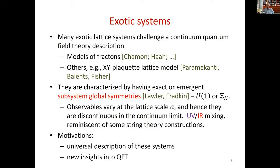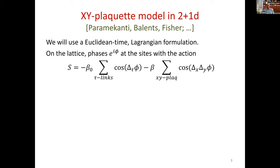Let me start by discussing the simplest system of this kind, which is the 2+1 dimensional model we can call the XY-Plaquette model — a remote cousin of the ordinary XY model. Being a high energy physicist, I prefer to work with the Euclidean time Lagrangian formulation, though we can easily take that to Lorentzian time in a Hamiltonian formulation. The model of Paramakanti, Balian, and Fisher has the following action: we sum over time-like links with coefficient beta_0 and the cosine of the time-difference derivative of phi, plus another term which sums around spatial plaquettes with alternating signs.